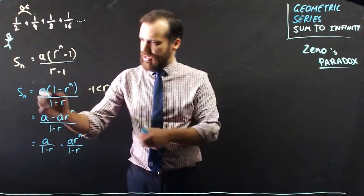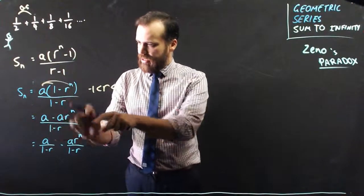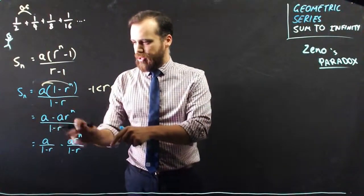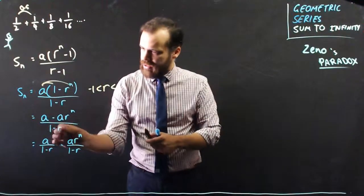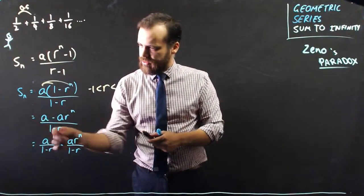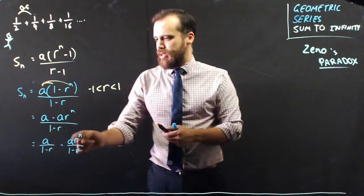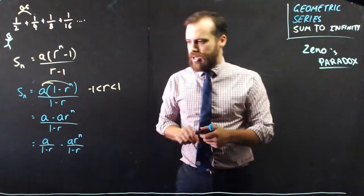Now, all I've done next is distributive law, and I get this: a minus ar to the n over 1 minus r. Now, I can split that fraction and make it a over 1 minus r minus ar to the n over 1 minus r.